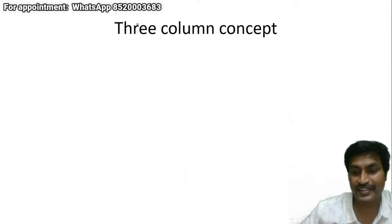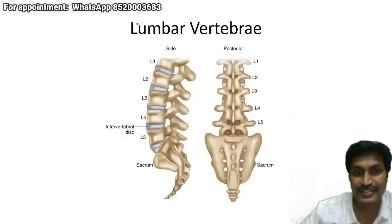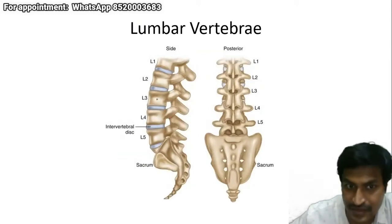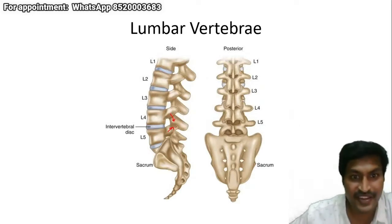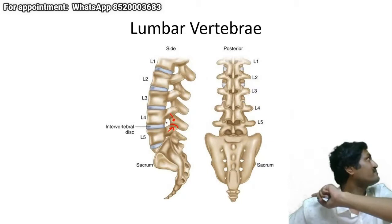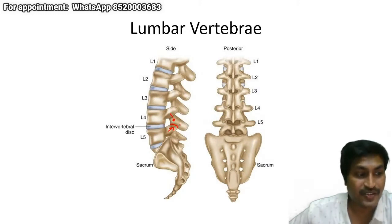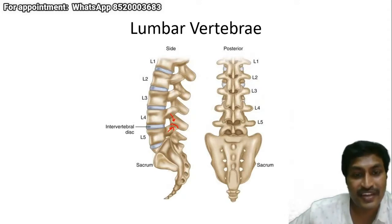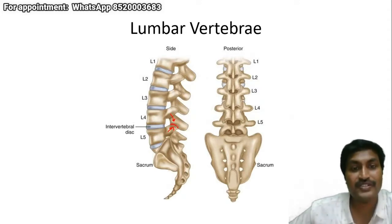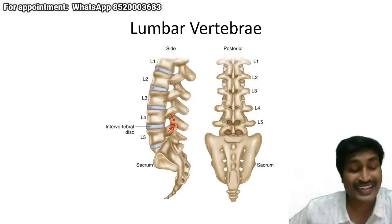We started on pars interarticulares. This junction — the superior articular facet, the inferior articular facet — this junction is known as the pars interarticulares. I'm telling you this repeatedly because it is very important. Every physiotherapist should be able to identify what pars interarticulares is. As Dr. Sandish has mentioned, the scottish dog sign is a classical MCQ exam question.